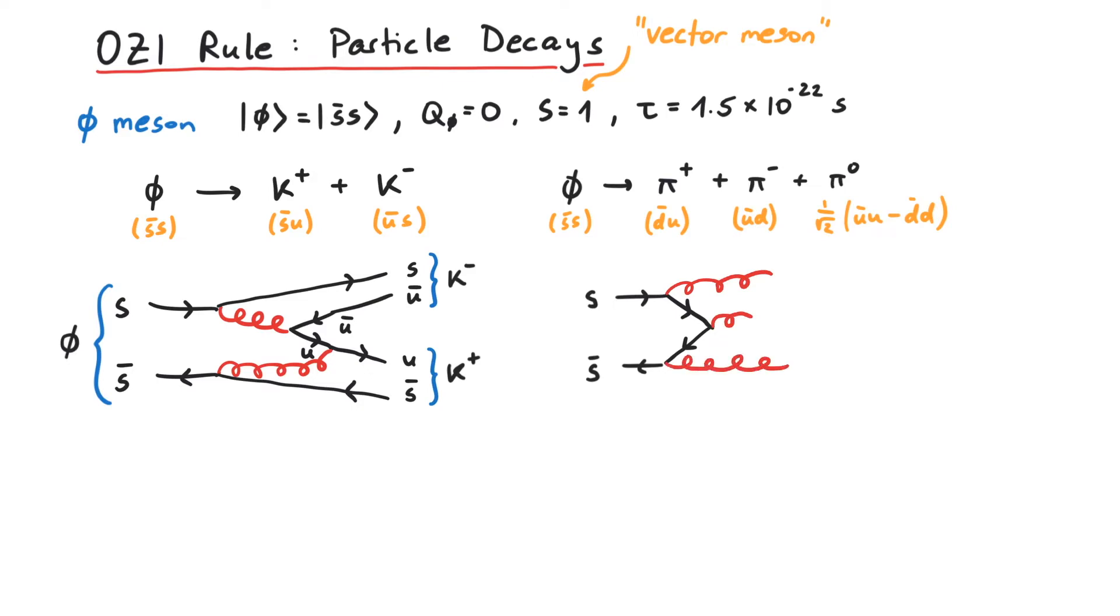These three gluons create quark-anti-quark pairs. The first one, a down-anti-down. The next one, an up-anti-up. And the last one, a down-anti-down again. If we compare this with our quark content above, we can identify the three pions.